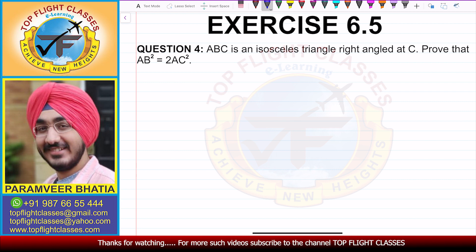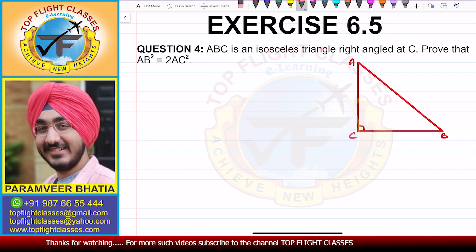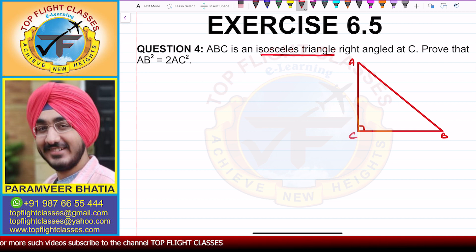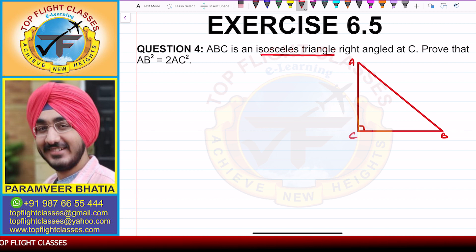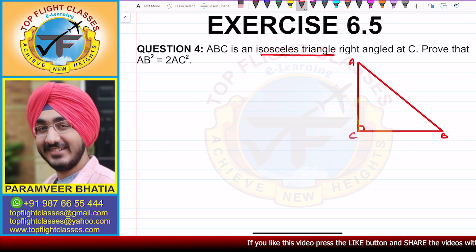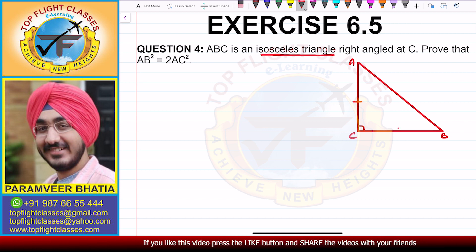We have a diagram of this. We have a triangle ABC which is right angled at C, and we have to prove that AB square is equal to 2AC square. Now, since the triangle is isosceles, the two sides other than the hypotenuse will be equal. That means AC and BC are equal.